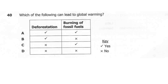Question 40. Which of the following can lead to global warming? A: deforestation and burning of fossil fuels. B: deforestation only. C: burning of fossil fuels only. D: neither. The correct answer here is A. Deforestation causes global warming because once plants are cut down, they can no longer absorb carbon dioxide from the atmosphere, leading to the greenhouse effect. Burning of fossil fuels also adds more carbon dioxide to the atmosphere, further contributing to global warming.